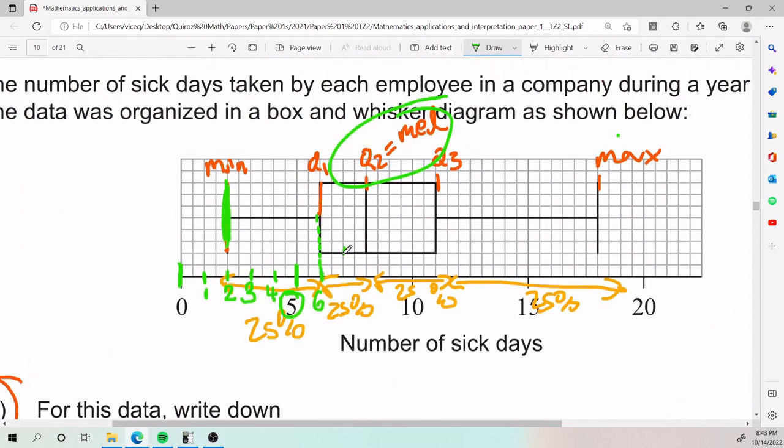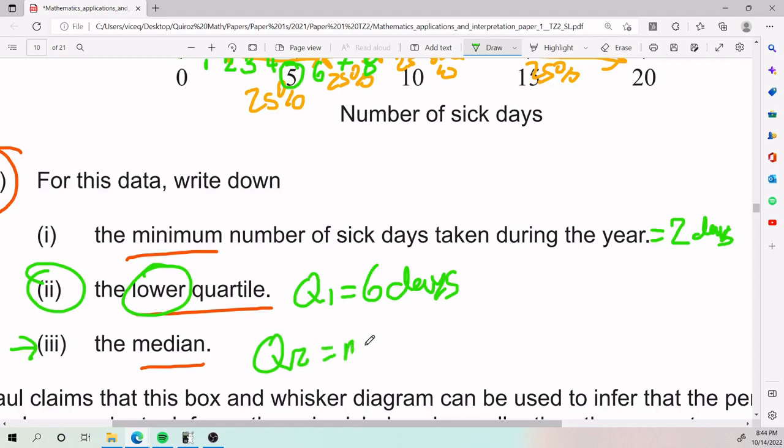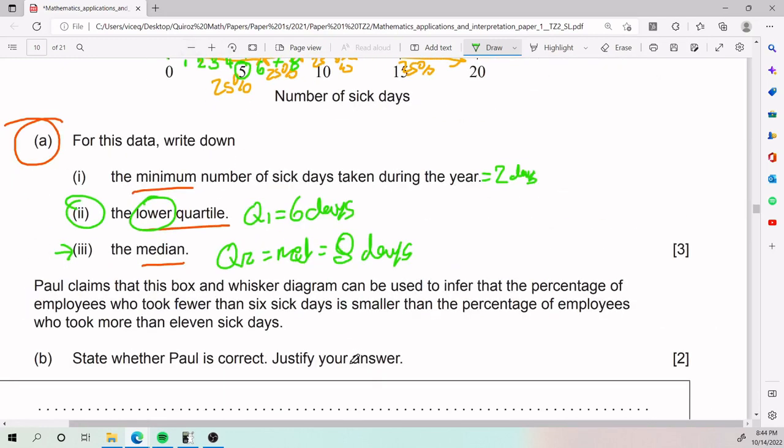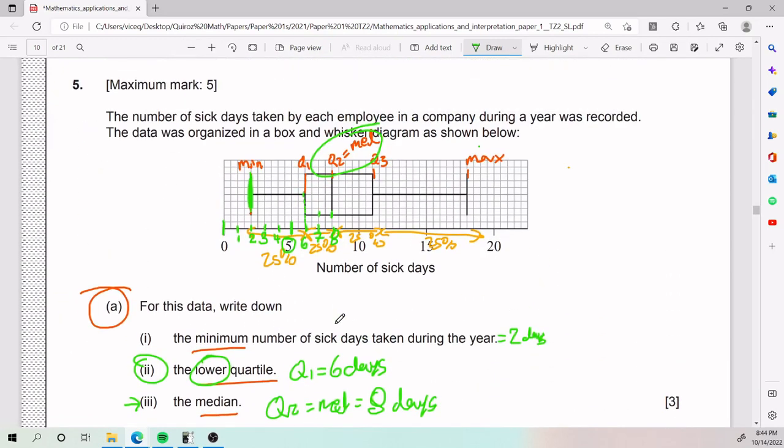Finally, for the median, it's right at Q2. We know that this has to be seven and of course this has to be eight. Okay, so Q2 or median, same thing, has to be eight days. All right, that is the entirety of part A. If I went a little too fast, I have other videos that go a little bit slower. You can check them out later.